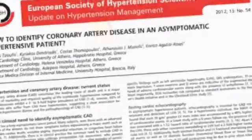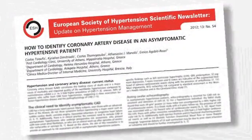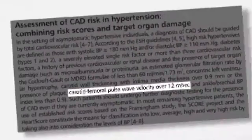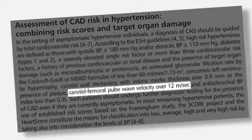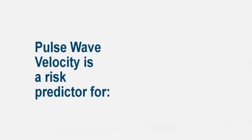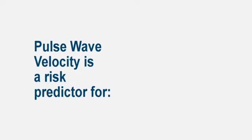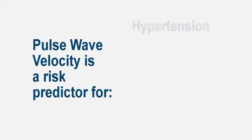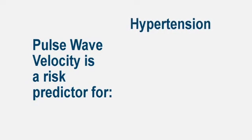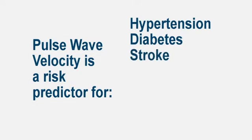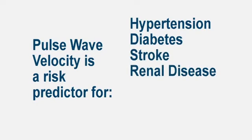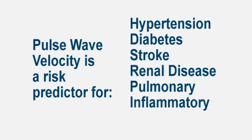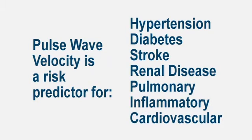According to guidelines from the European Society of Hypertension, a value above 12 meters per second is an indicator for target organ damage. In addition to assessing the effect of arterial stiffness on hypertension, pulse wave velocity is used as a risk predictor in diabetes, stroke, renal disease, pulmonary and inflammatory diseases, as well as cardiovascular disease.